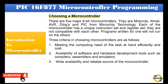Choosing a microcontroller: there are five major 8-bit microcontrollers — Motorola, Atmel, AVR, Xilinx, and PIC from Microchip Technology. Each microcontroller has a unique instruction set and register set; they are not compatible with each other, and programs written for one will not run on the others. Three criteria in choosing a microcontroller are: 1. Meeting the computing need of the task at hand efficiently and cost-effectively. 2. Availability of software and hardware development tools such as compilers, assemblers, and emulators. 3. Wide availability and reliable source of the microcontroller.